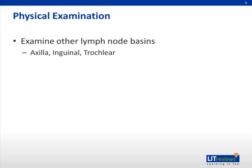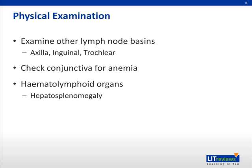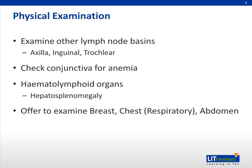The lymph node basins include the axillary, inguinal, as well as tracheal lymph nodes. The patient can also be checked for anemia as well as hepatosplenomegaly, which will support this diagnosis. If tuberculosis is suspected, offer to auscultate the chest. If the nodes are infraclavicular, offer to perform a breast and abdominal examination.